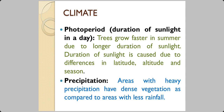Photoperiodism is a term in botany and biology meaning the duration of sunlight in a day. This duration of sunlight influences the flowering property of plants. Trees grow faster in summer due to longer duration of sunlight, and duration of sunlight is caused by differences in latitude, altitude, and season — explaining the presence of different types of plants in different areas. Precipitation means rainfall, snowfall, sleet, or hail, and areas with heavy precipitation naturally have a denser vegetation cover compared to places with less rainfall.